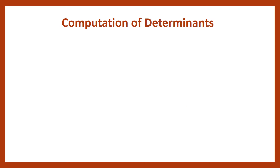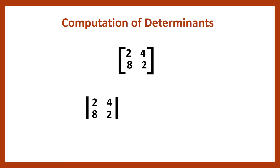Now let us try out a problem. A 2 by 2 matrix is given: 2, 4, 8, 2. We have to find the determinant of this matrix. We multiply 2 into 2, then subtract 8 into 4. So 2×2 minus 8×4 equals 4 minus 32, which is minus 28. This minus 28 is the determinant value of the given matrix.